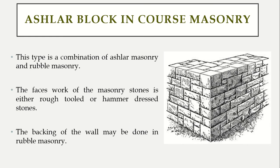Ashlar block in course is a combination of rubble masonry and ashlar masonry — undressed stones combined with dressed stones. This is mostly used in walls where you want the front to look beautiful using ashlar masonry with dressed stones, but the back side uses rubble masonry with undressed stones to save cost. The front side using dressed stones is called the facing of the wall, and the back side is called the backing.